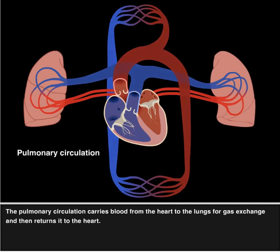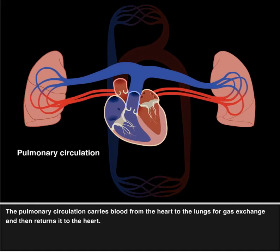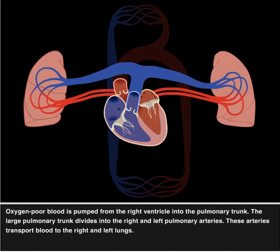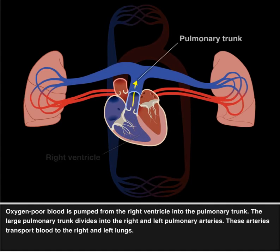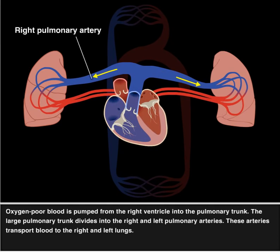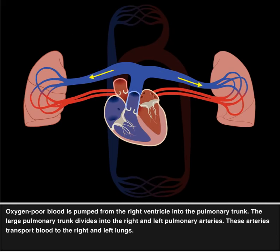The pulmonary circulation carries blood from the heart to the lungs for gas exchange and then returns it to the heart. Oxygen-poor blood is pumped from the right ventricle into the pulmonary trunk. The large pulmonary trunk divides into the right and left pulmonary arteries, which transport blood to the right and left lungs.